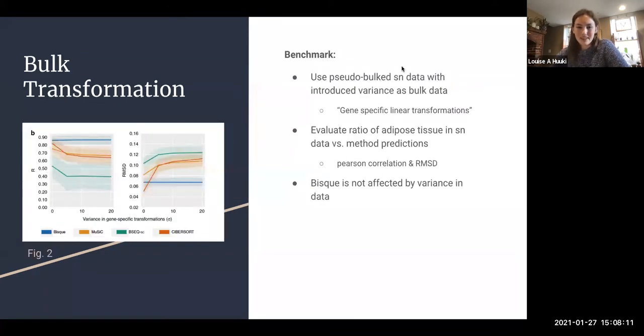The first thing they do is revisit that bulk transformation idea. This is the adipose data—they pseudo-bulked the single cell data so they know the ground truth of the proportions of cells. Then they introduced variance, so variance introduced to the different datasets is along the x-axis here. The x-axis represents gene specific linear transformations.